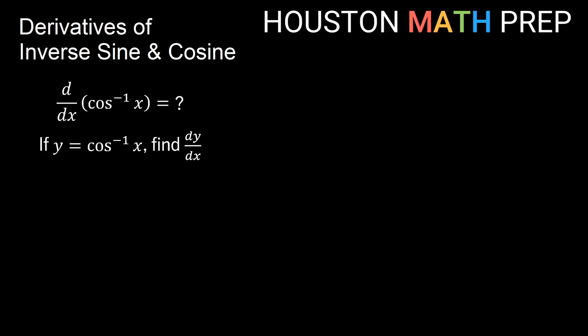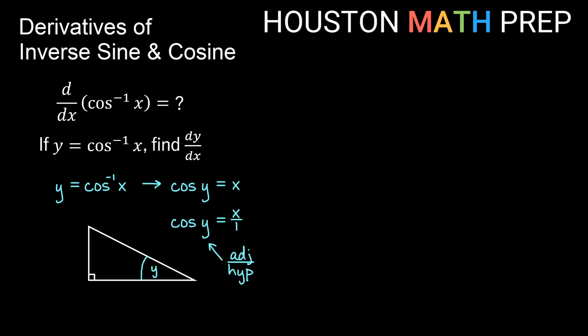We can do a similar thing to find the derivative of inverse cosine. With y equals inverse cosine of x, we rewrite it as cosine of y equals x, and set up a right triangle again with y as an angle. Cosine is adjacent over hypotenuse, so x over 1 gives us x as the adjacent and 1 as the hypotenuse. Using the Pythagorean theorem, the missing side is again the square root of 1 minus x squared.